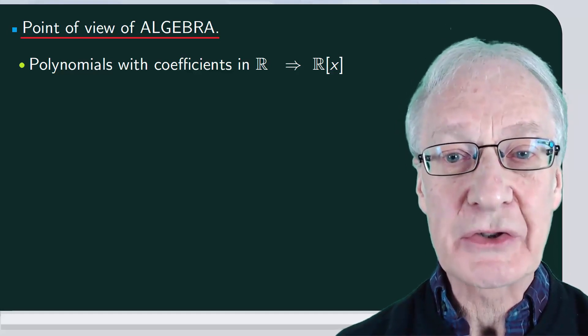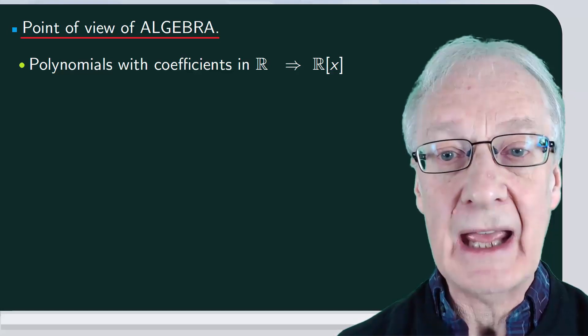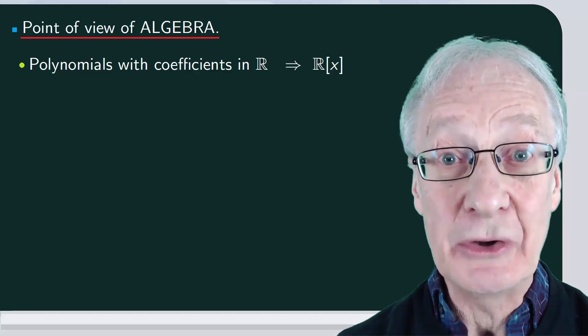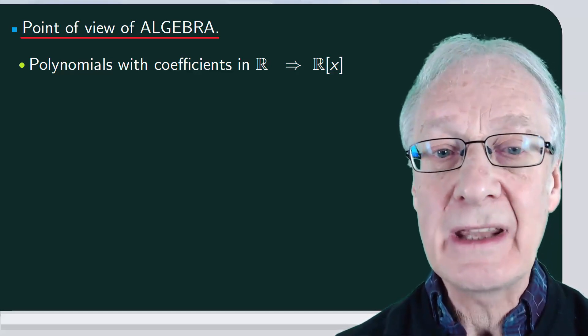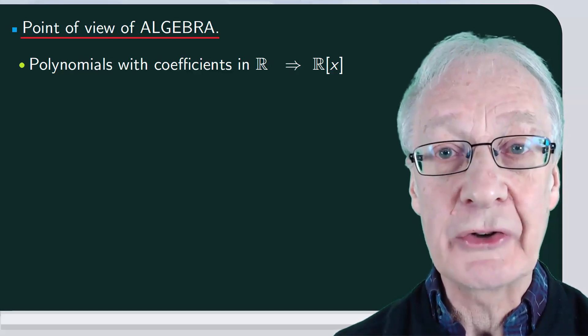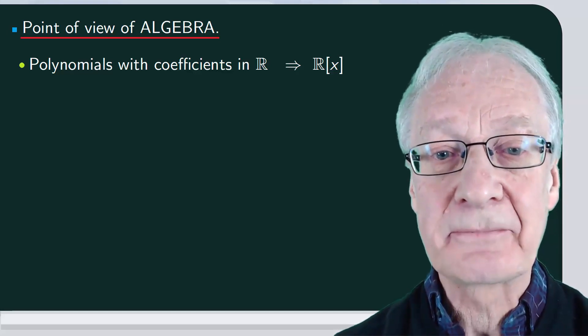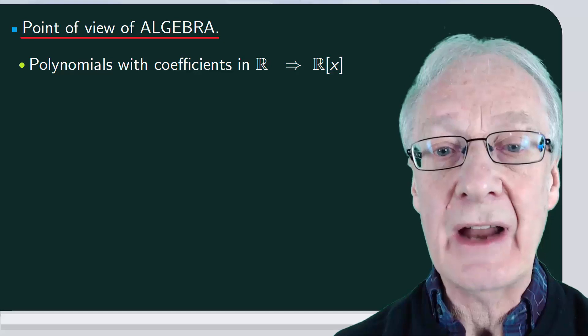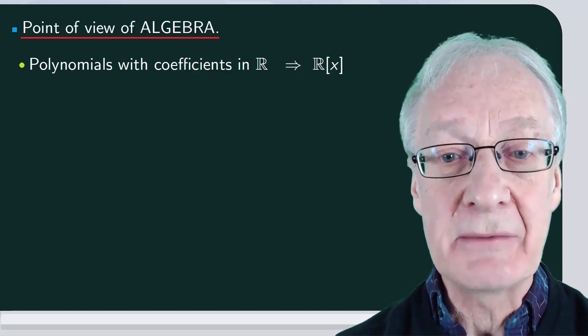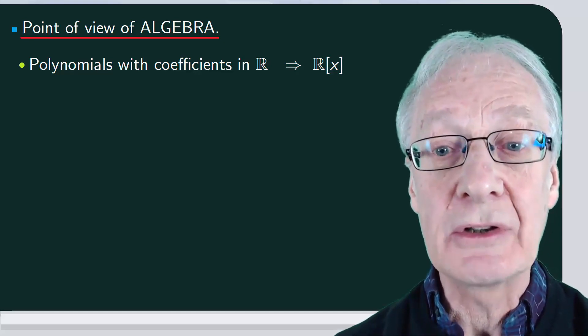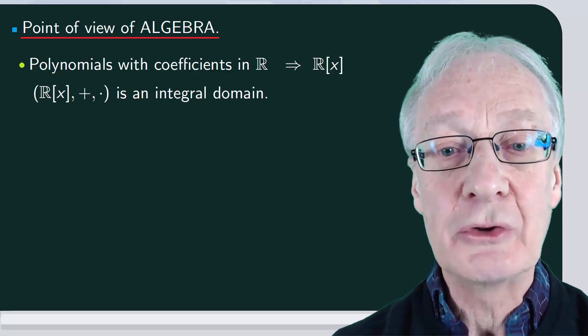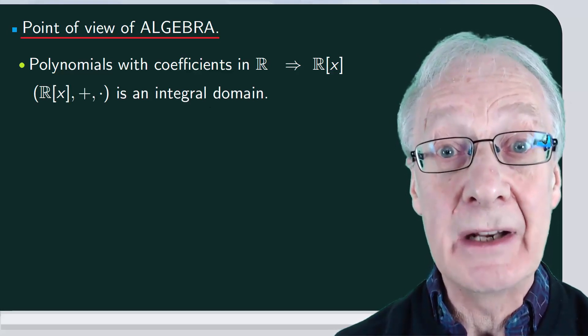However, as with the integers for the product, in the case of rx, not all the elements have an inverse. Only the non-zero constant polynomials have. The structure of rx with the operation sum and product is called the integral domain. We'll talk more about this concept in another video.